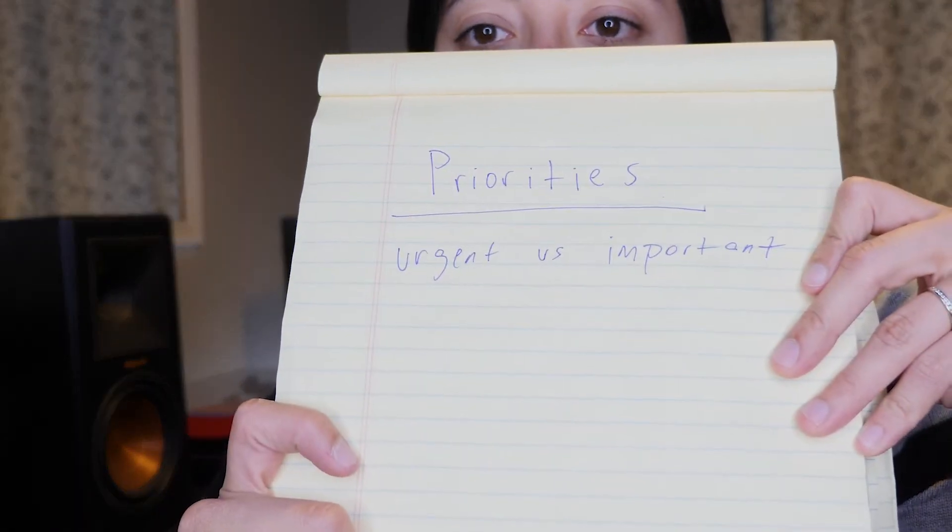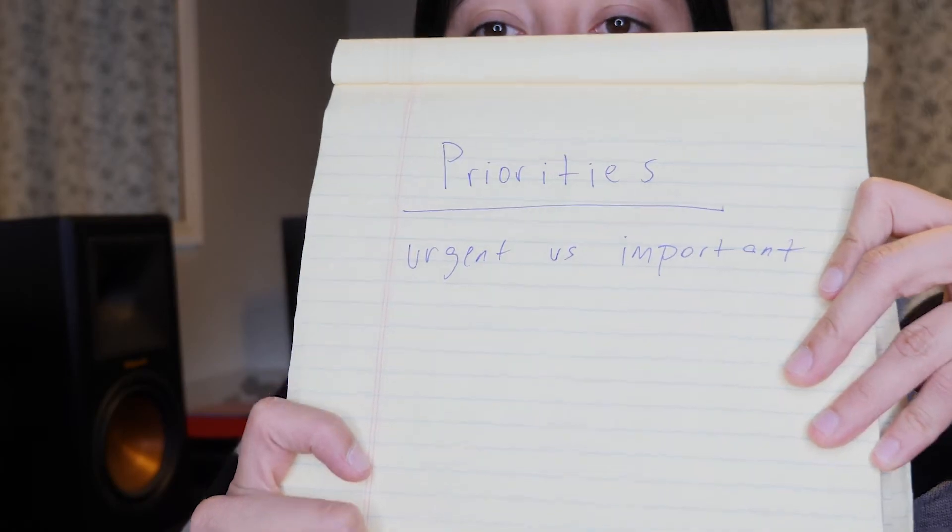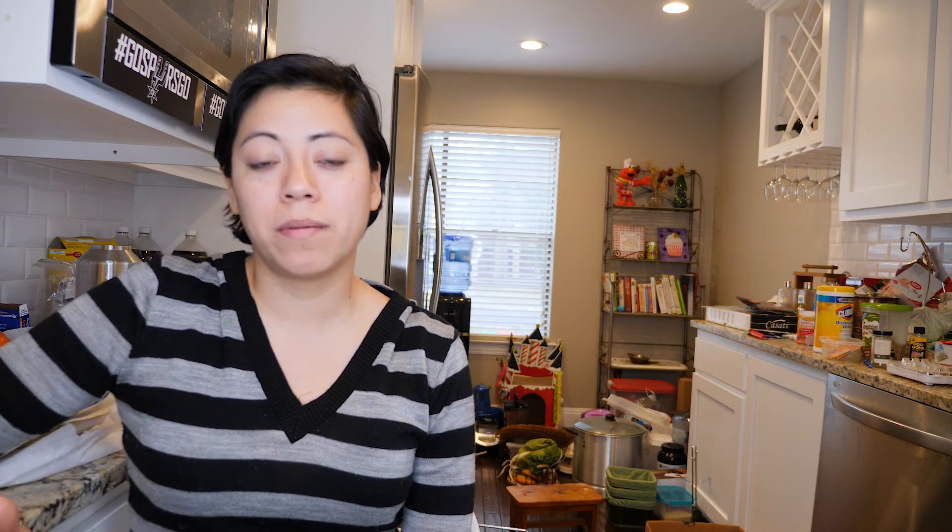The next thing I had to figure out were priorities. How do I know what my priorities are? How do I know what to prioritize first, second, and third? What I figured out is that priorities are things that have to be done — things that have a deadline. For us, we have to be packed up and moved out of this house by next week. I cannot put off packing to edit or film for hours each day because I have to focus my time on packing. That is a priority.